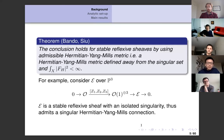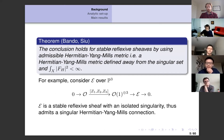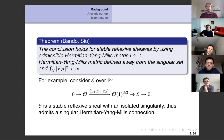This was later generalized by Bando and Siu to the case of stable reflexive sheaves, using the so-called admissible Hermitian-Yang-Mills metric. As mentioned, reflexive sheaves are bundles which could have codimension-three singularities. When talking about the Hermitian-Yang-Mills connection, it is defined away from the singular set of the bundle, but at the same time the L² norm of the curvature must be finite. This is the so-called admissible Hermitian-Yang-Mills metric.